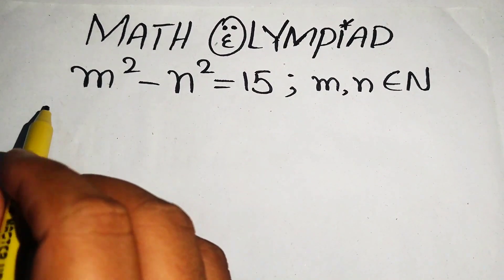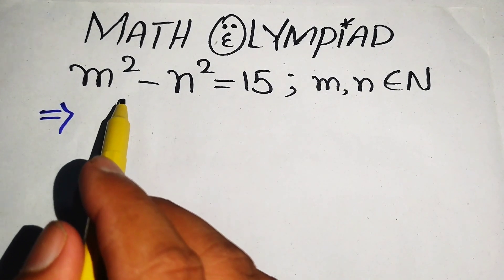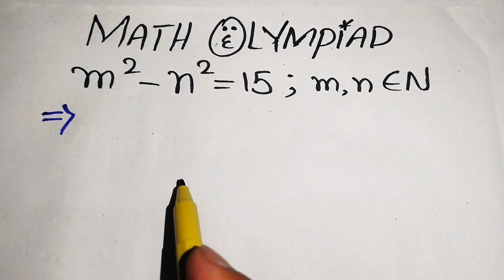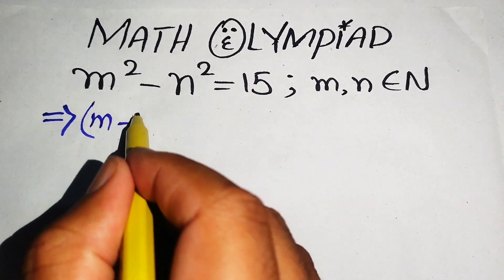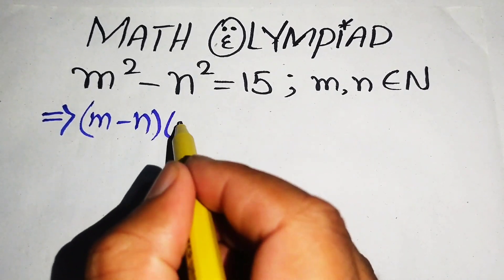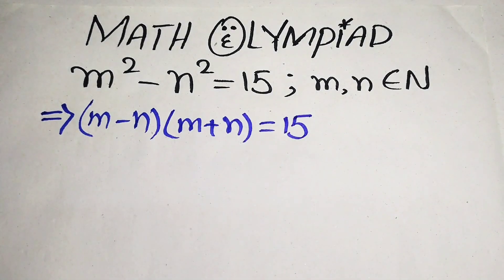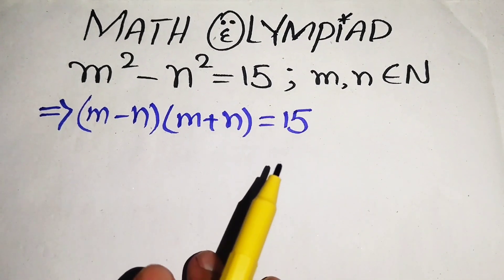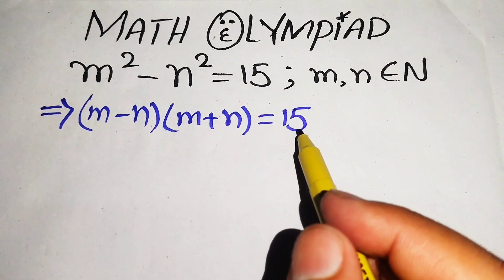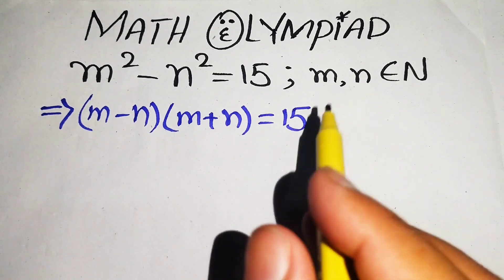First, we focus on the left-hand side. We apply the well-known identity: m squared minus n squared equals m minus n times m plus n, which equals 15. On the left-hand side we have two factors multiplied together, but on the right-hand side we have only one value, so we need to find factor pairs of 15.